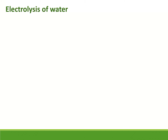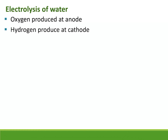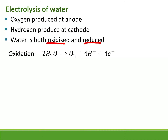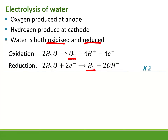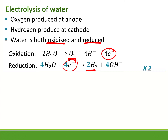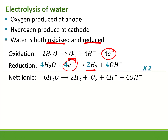We can also electrolyze water. If we put water in a container and pass an electric current through it, we will see oxygen gas produced at the anode and hydrogen gas produced at the cathode. Water is both oxidized and reduced: when oxidized it forms oxygen, and when reduced it forms hydrogen.